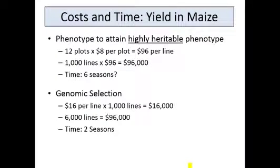Another advantage you might get from genomic selection is cost and time. In some cases, genomic selection can actually cost you less than going through phenotypic selection. For yield in maize: if you want to phenotype a population of lines to attain highly heritable phenotypes, you may want to do 12 yield plots at $8 per plot — that's $96 per line. If you do a thousand lines, that's $96,000, and it would take about six seasons. With genomic selection, you can genotype a line in maize for about $16, so a thousand lines would cost $16,000. For that same $96,000 spent on phenotyping, you could actually genotype 6,000 lines and go through a cycle of genomic selection in two seasons.